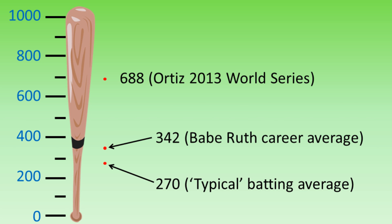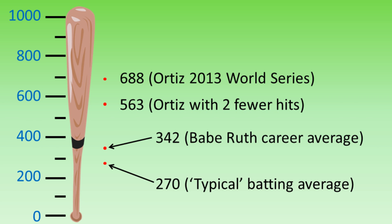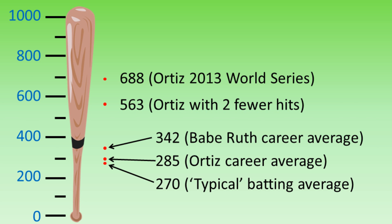But this leads us to our final lesson: sample size. It's far easier to have a really high, or indeed a really low, average when we're only talking about a few games. That's because an extra one or two hits makes such a huge difference. Let's imagine that Ortiz only had nine hits and not 11. Nine divided by 16 comes out at an average of 563 — still huge, but a lot less than 688.